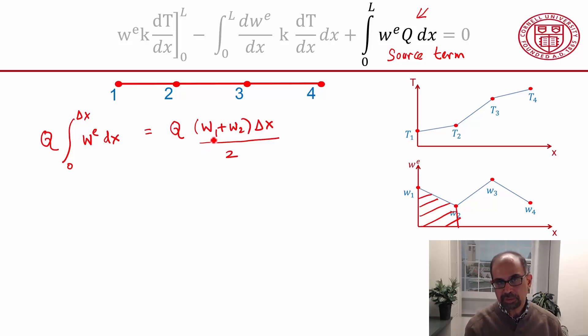And I can split this into the part that depends on w1 and w2. So the part that depends on w1 is going to be q delta x over 2, and the part that depends on w2 is going to also be q delta x over 2.